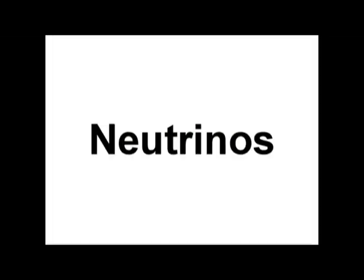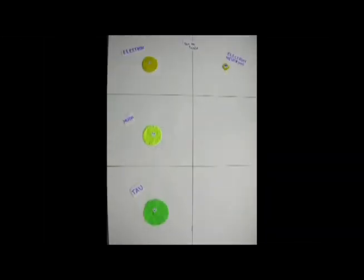Again, there are six of these and we have already met one of them, the electron. We also have the muon and the tau, which are more massive than the electron. The other three are types of neutrinos: the electron neutrino, the muon neutrino and the tau neutrino.